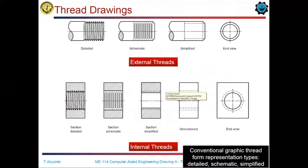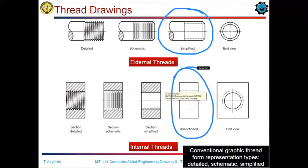The thread representations in engineering and technical drawings are mostly simplified representations. On the top side, we have external threads. On the bottom side, we have the internal threads.